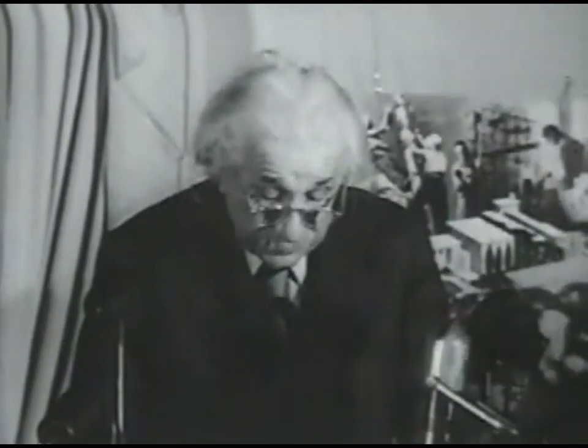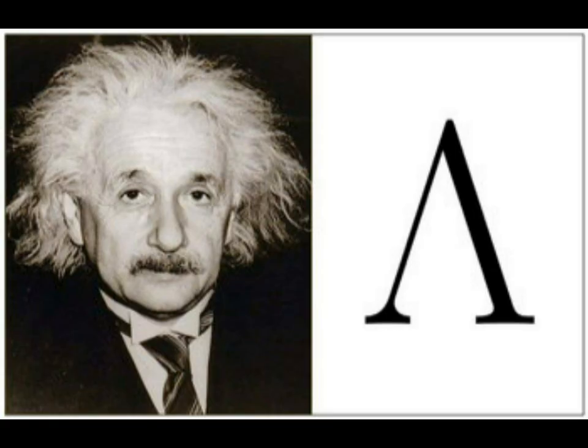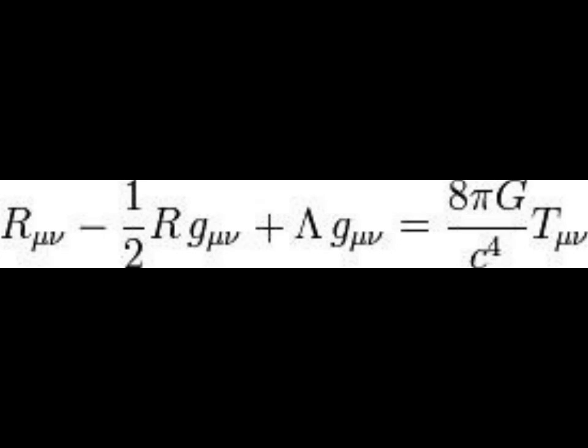Before the 20th century, most scientists believed in a static and eternal universe. In 1917, Albert Einstein inserted a positive cosmological constant into his theory of general relativity to force the equations to predict a stationary universe.